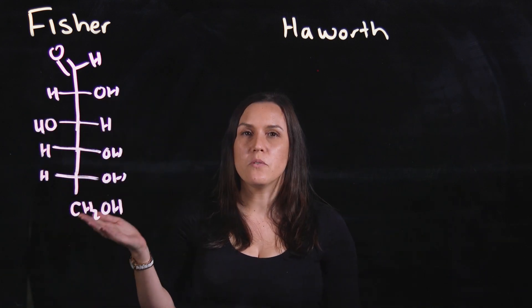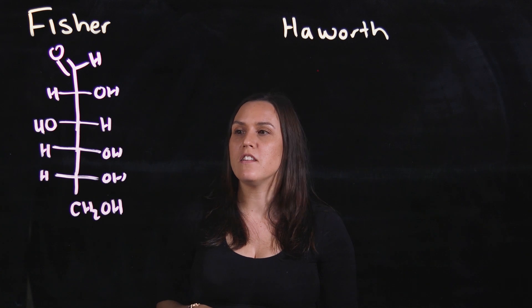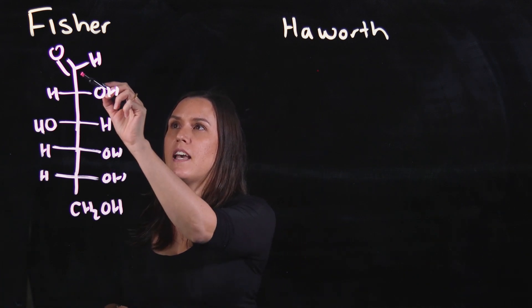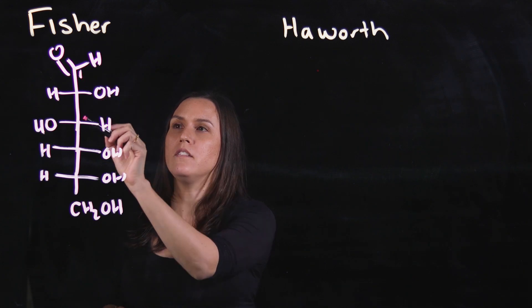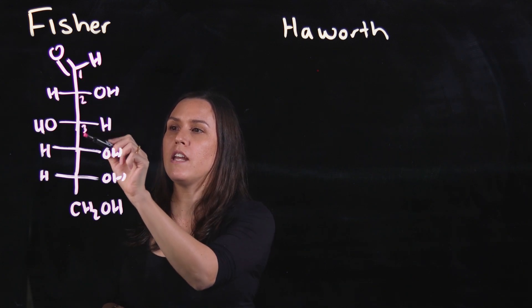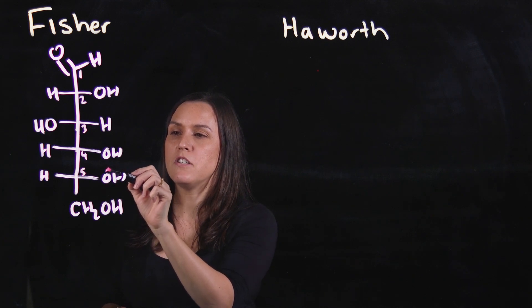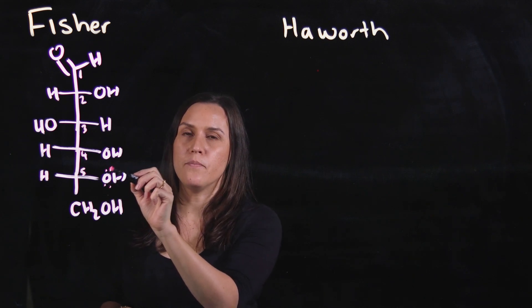If we start with the Fischer projection and convert that to the Haworth projection, remember we have cyclization. This is our anomeric carbon 1, 2, 3, 4, 5, and this would be our sixth position on our ring.